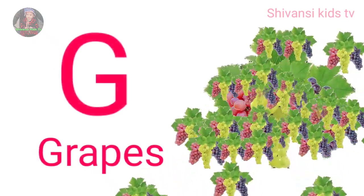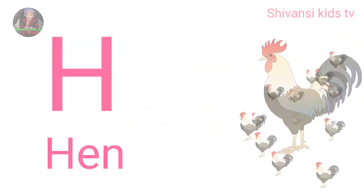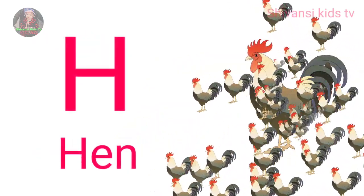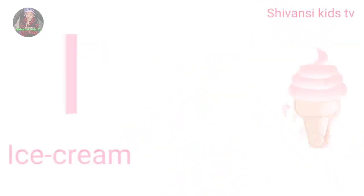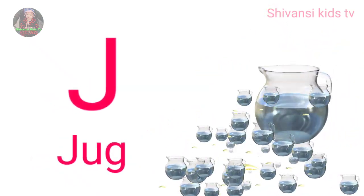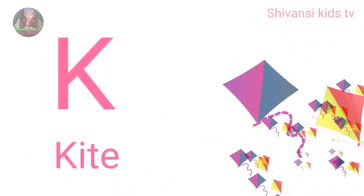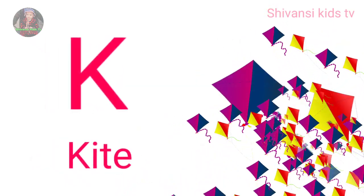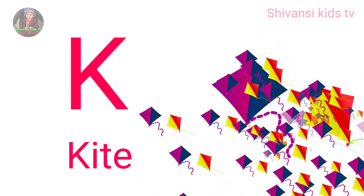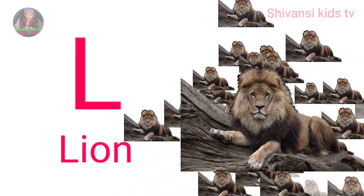G for grapes, H for hand, I for ice cream, J for jug, K for kite, L for lion.